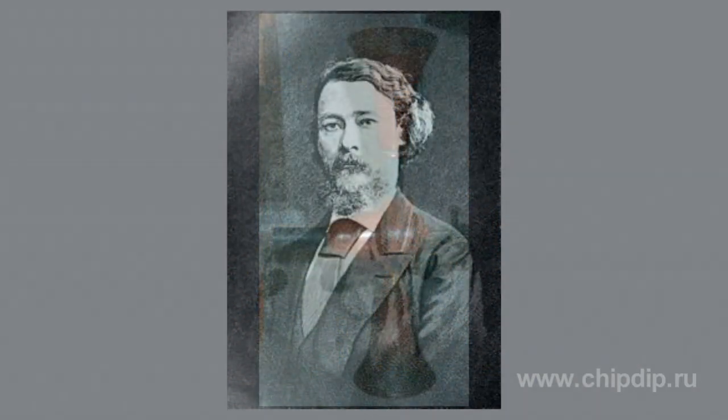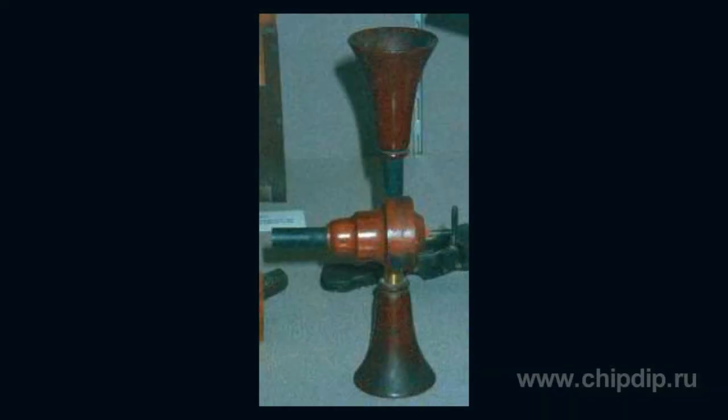Koenig's manometric flame apparatus included a box operated as an up-to-date microphone. Sound was transmitted from a source to a box capsule via a horn or a pipe. The box was separated into two parts by an elastic membrane, usually made of rubber resin.